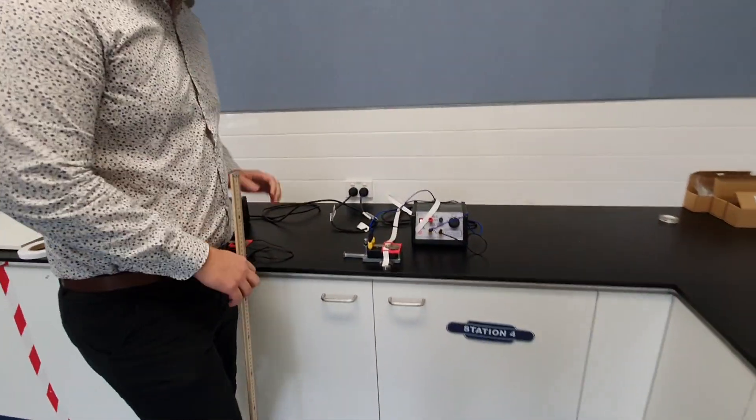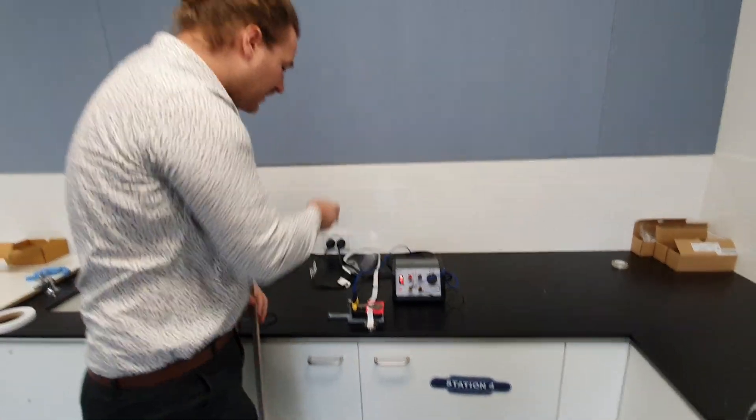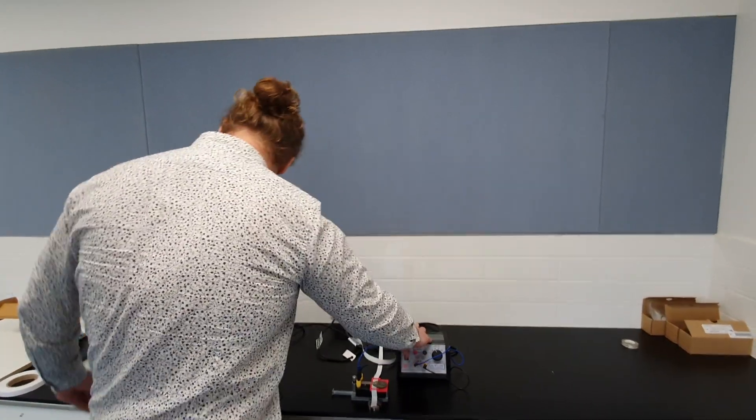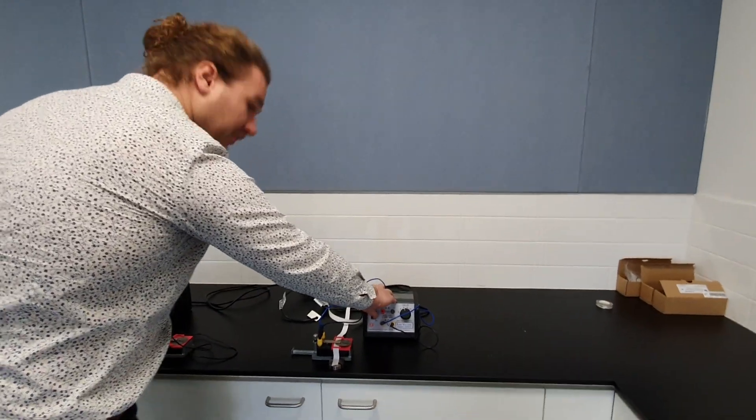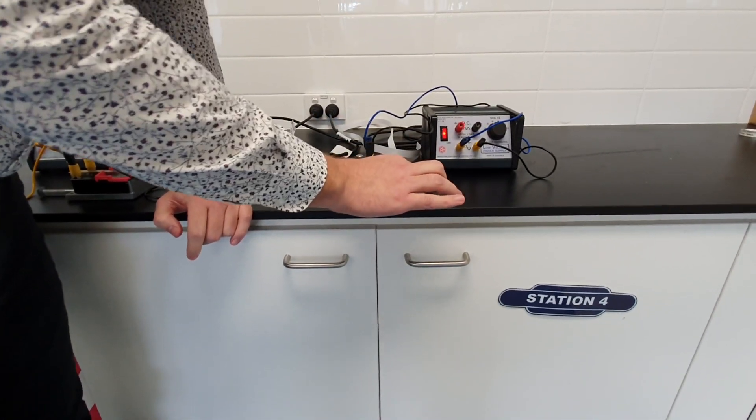Now what we're going to do is rather than me pulling at constant speed, we're going to set up another ticker timer. I'll get rid of my ruler. Turn this one on and now I'm going to drop this weight.